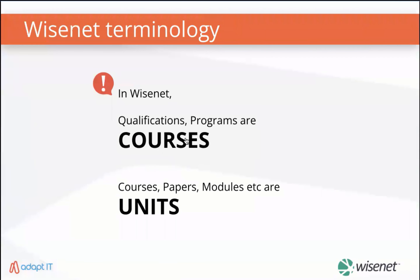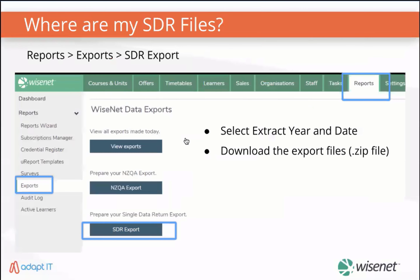Let's start by understanding the WISENIT terminologies. A program or a qual corresponds to a course, and a course, paper or module corresponds to a unit in WISENIT. The SDR is a set of files which you can easily export from WISENIT. The files contain data on learner characteristics, course details and actual EFS on a monthly basis.